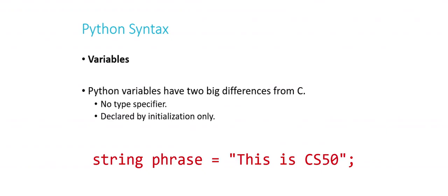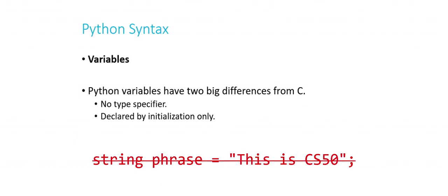Similarly, we can declare a string: 'phrase = "this is CS50"'. In C we'd have to include the CS50 library because string is not a native data type. But it is in Python — we just say 'phrase = "this is CS50"'. Python also supports strings with double quotes or single quotes, which is really useful if you need to declare a string that has quotation marks in it. You can alternate between single and double quotes, which is handy when working with a lot of text, particularly with databases.